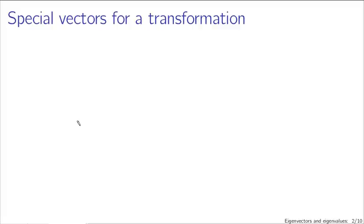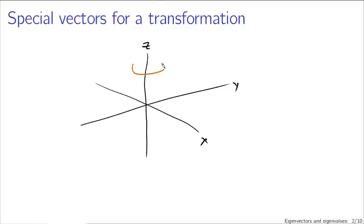Essentially, what eigenvectors and eigenvalues are are special vectors for a transformation. Suppose I have Cartesian 3-space with an x-coordinate, y-coordinate, and z-coordinate. If I consider a transformation that is rotation about the z-axis, a vector in the x-y plane would be rotated around to point in some other direction, remaining in the x-y plane. A vector that points along the z-axis would remain unchanged, whether it's pointing upwards or downwards.